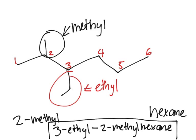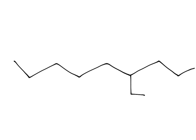And so let's do something a little harder. We'll do something like this. So first off, we need to start by numbering the longest chain. And so we'll start here. 1, 2, 3, 4, 5, 6, 7, 8, 9. So it's going to be a nonane.